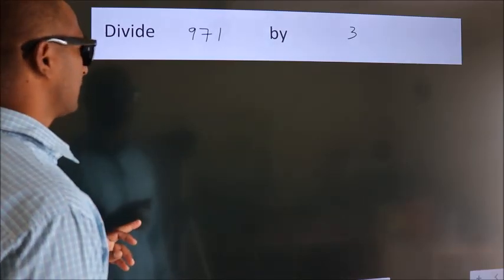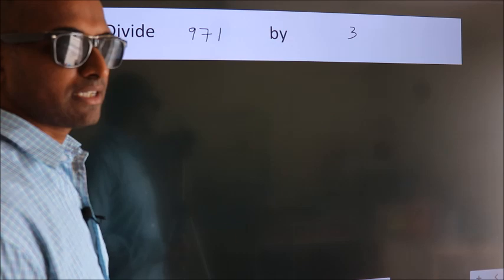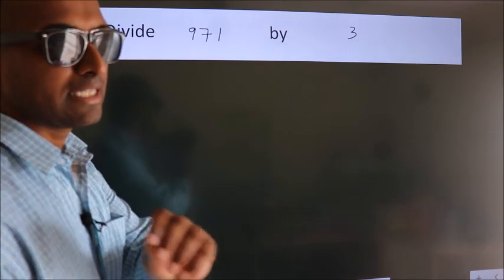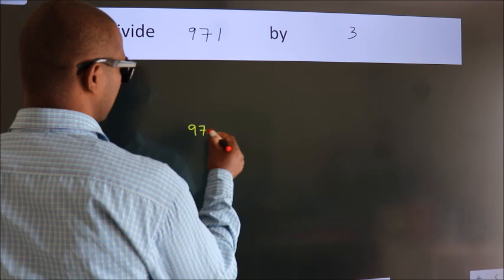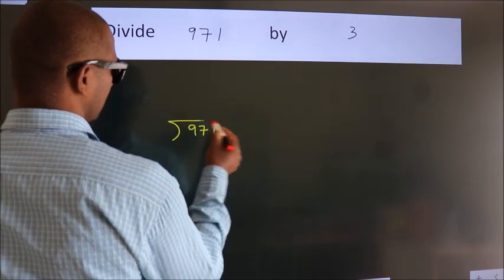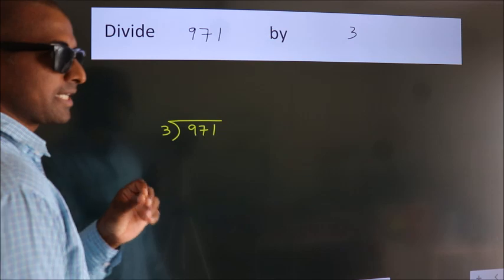Divide 971 by 3. To do this division, we should frame it in this way: 971 here, 3 here. This is your step 1.